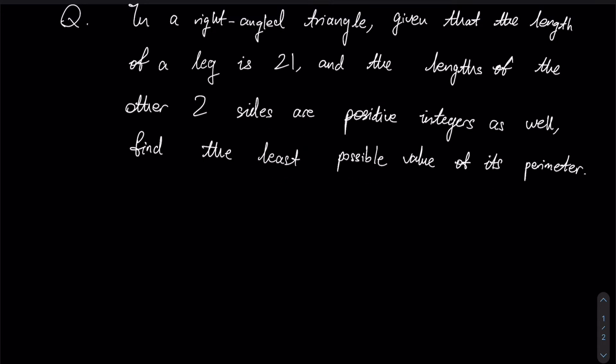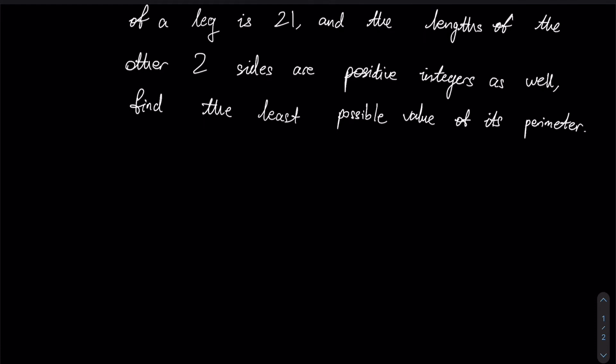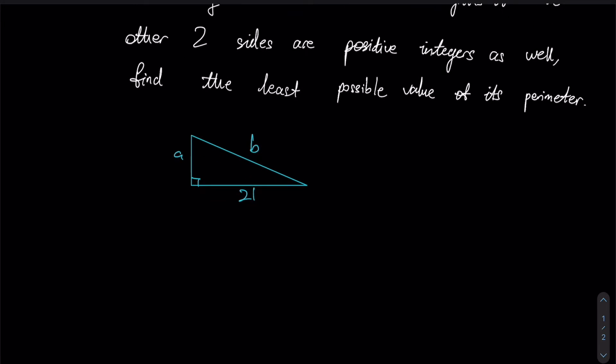So given all these criteria, how can we find the least possible value of its perimeter? We're trying to minimize a certain value over here. Let us first draw a right angle triangle where this is your right angle. Let this side here be 21, and I'll let these two sides be a and b, where b is our hypotenuse.